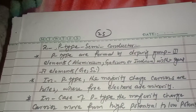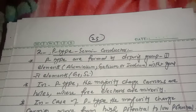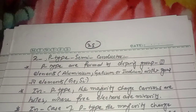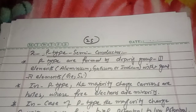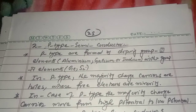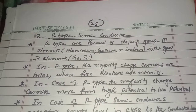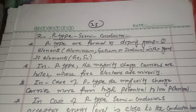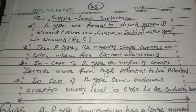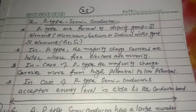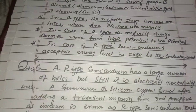P-type semiconductors are formed by doping group three elements — aluminum, gallium, indium — with the group four element. In p-type semiconductor, the majority charge carriers move from high potential to low potential. In p-type semiconductor, the acceptor energy level is close to the conduction band.